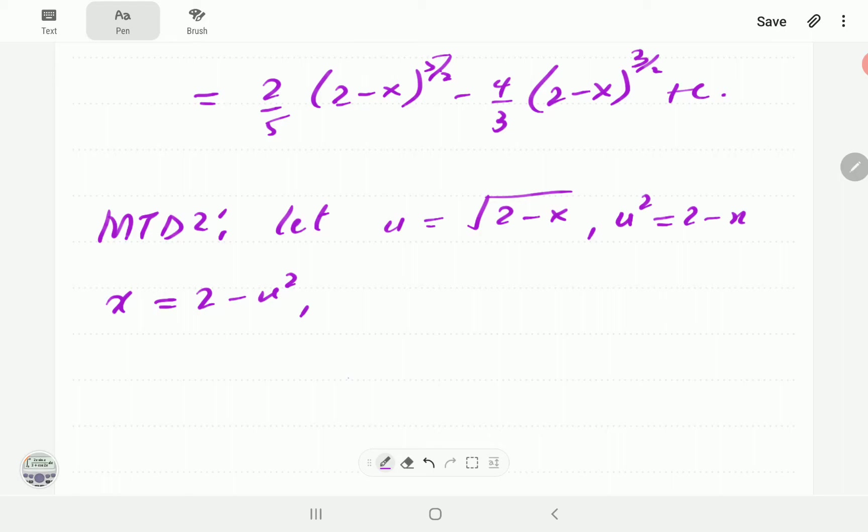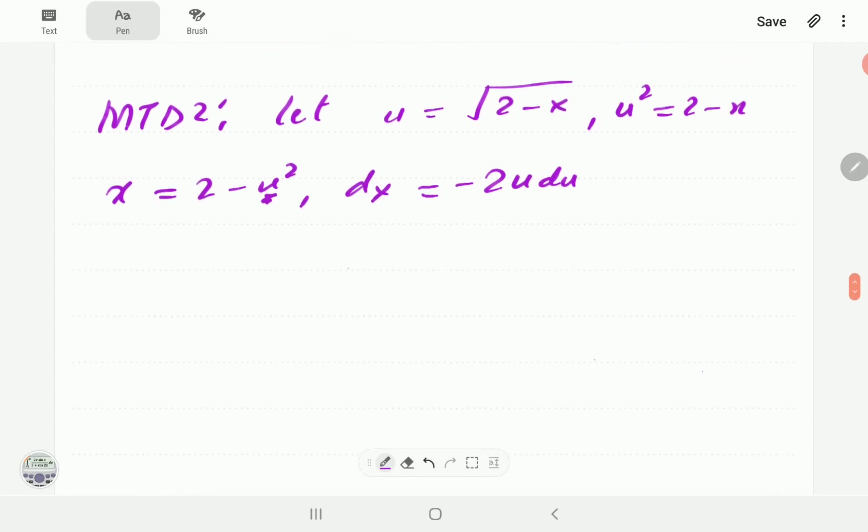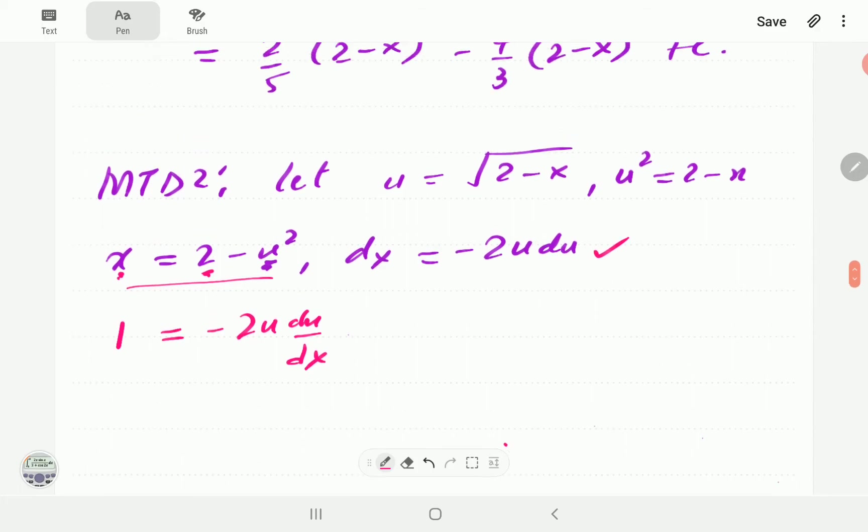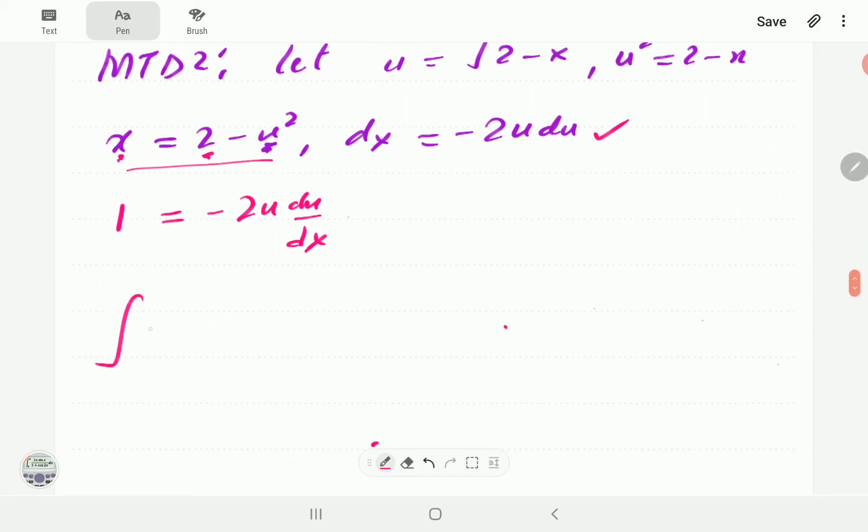If we differentiate on both sides, on the left-hand side we have dx. On the right-hand side, we have -2u du. Let's do the steps there. We're doing implicit differentiation. Remember u is a function of x. Derivative of this side is 1. Derivative of 2 is 0. Derivative of this is -2u, then du/dx. If multiplied by dx on both sides, we get this thing here.